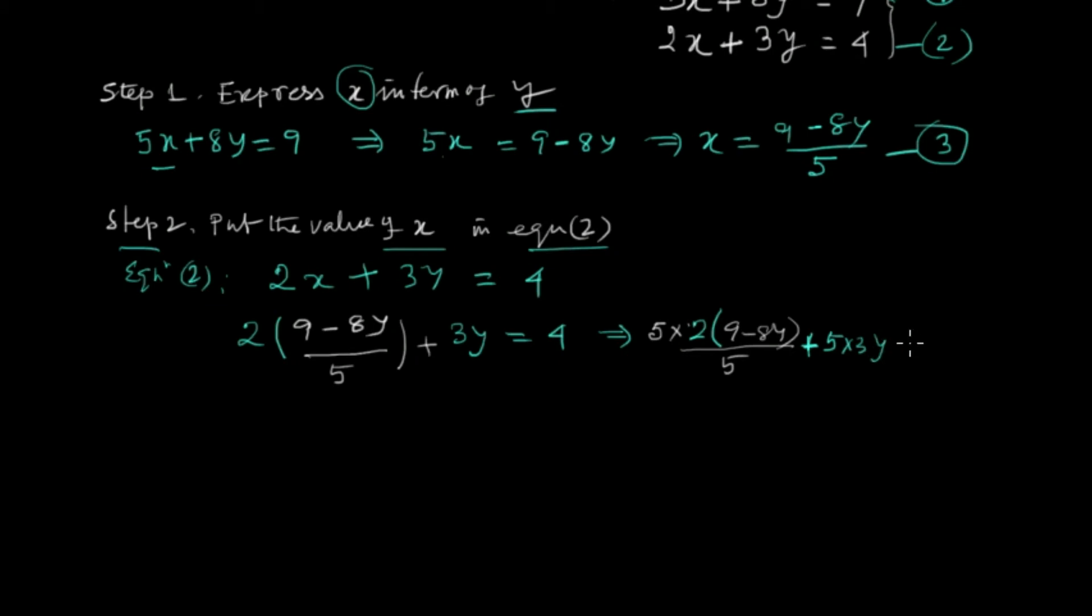Cancelling 5, we get 2 times 9 is 18, minus 16y, plus 15y equals 20.